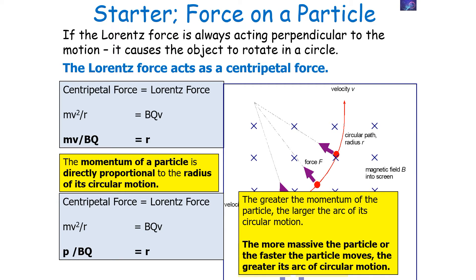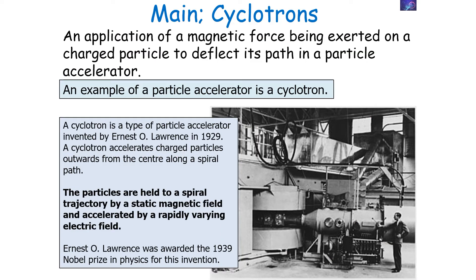The more massive a particle, or the faster a particle moves, the greater its arc of circular motion. An application of a magnetic force being exerted on a charged particle to deflect its path is a particle accelerator. An example of a particle accelerator is a cyclotron — a type of particle accelerator invented by Ernest Lawrence in 1929.